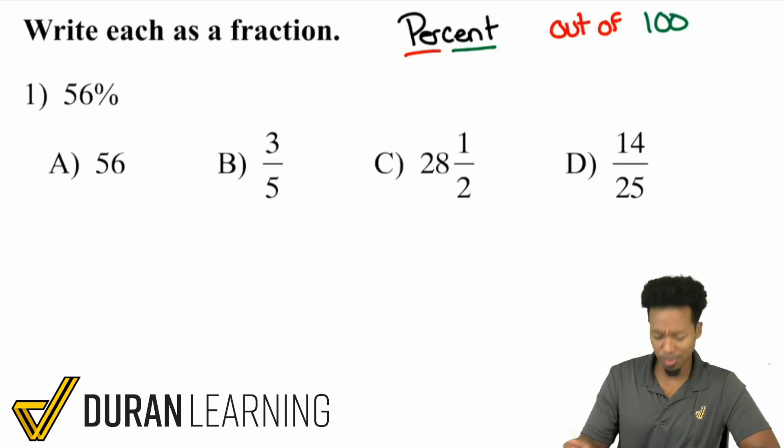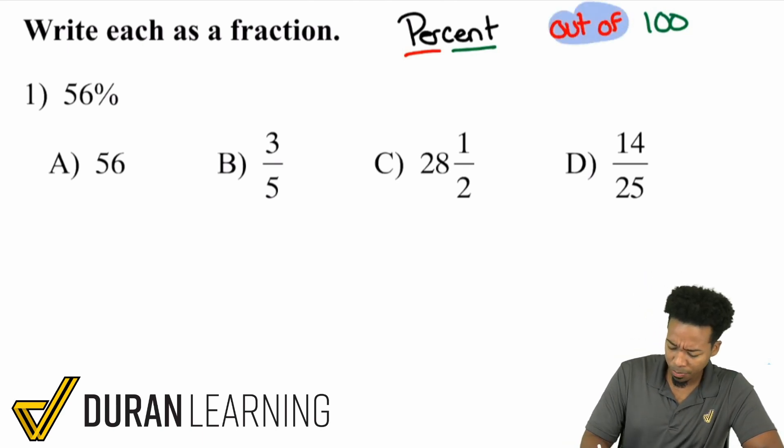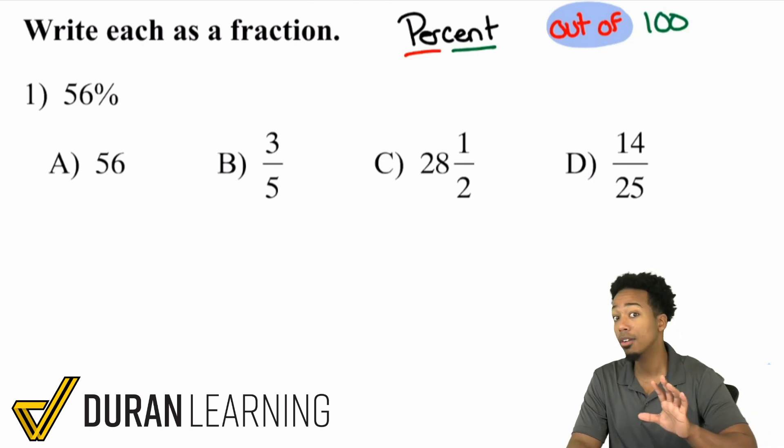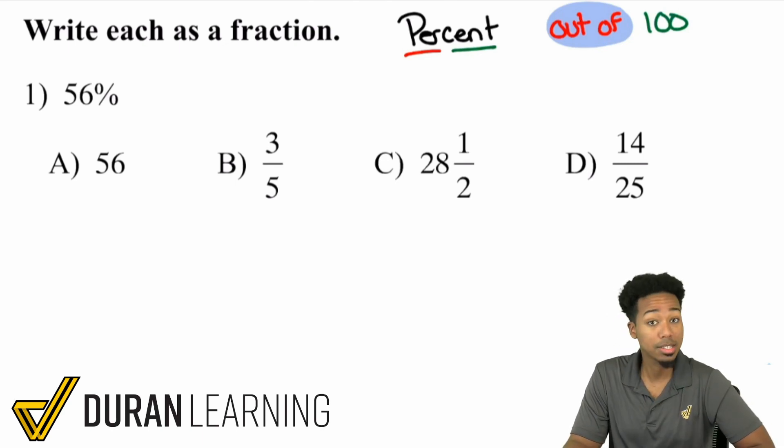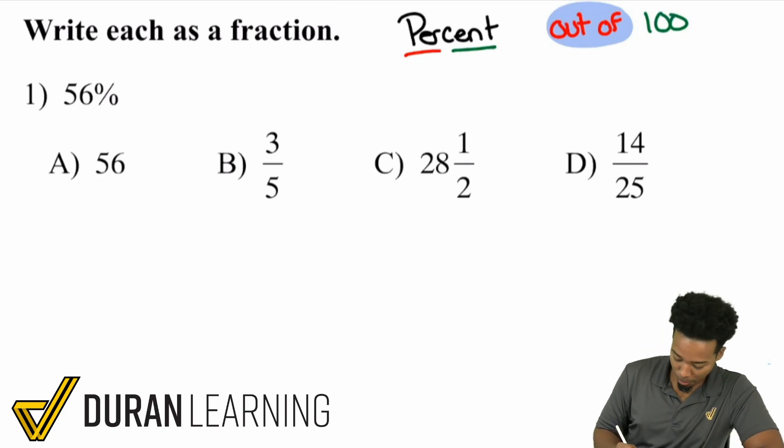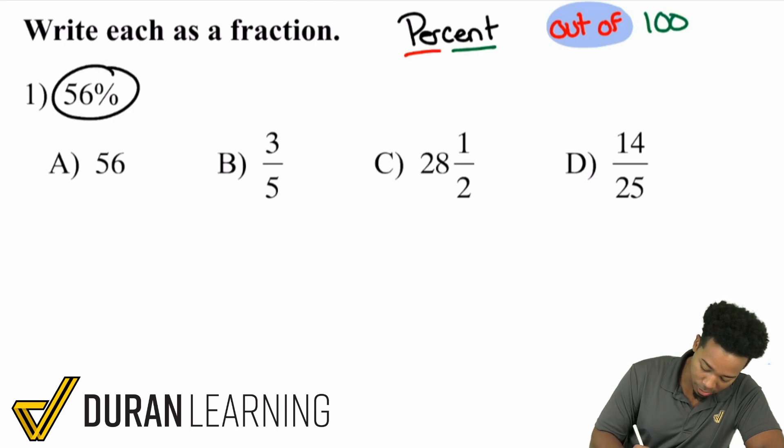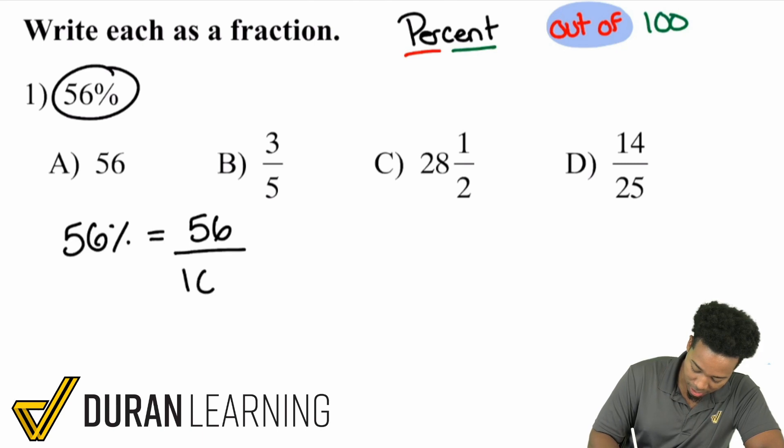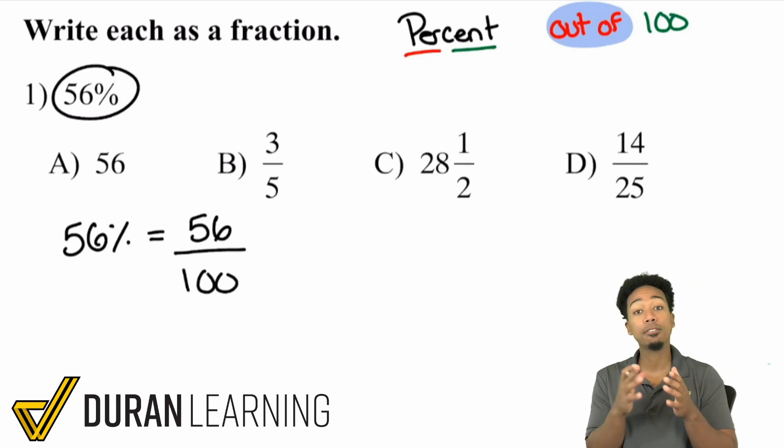The reason I'm showing you that is because my simple question is, what does the phrase out of mean in math? Out of means divide. And so basically to turn a percent into a fraction, you need to realize that every percent, like 56%, is the same thing as saying 56 out of a hundred. That is the literal translation. So you can turn any percent into a fraction by placing that number over a hundred and you're fine.